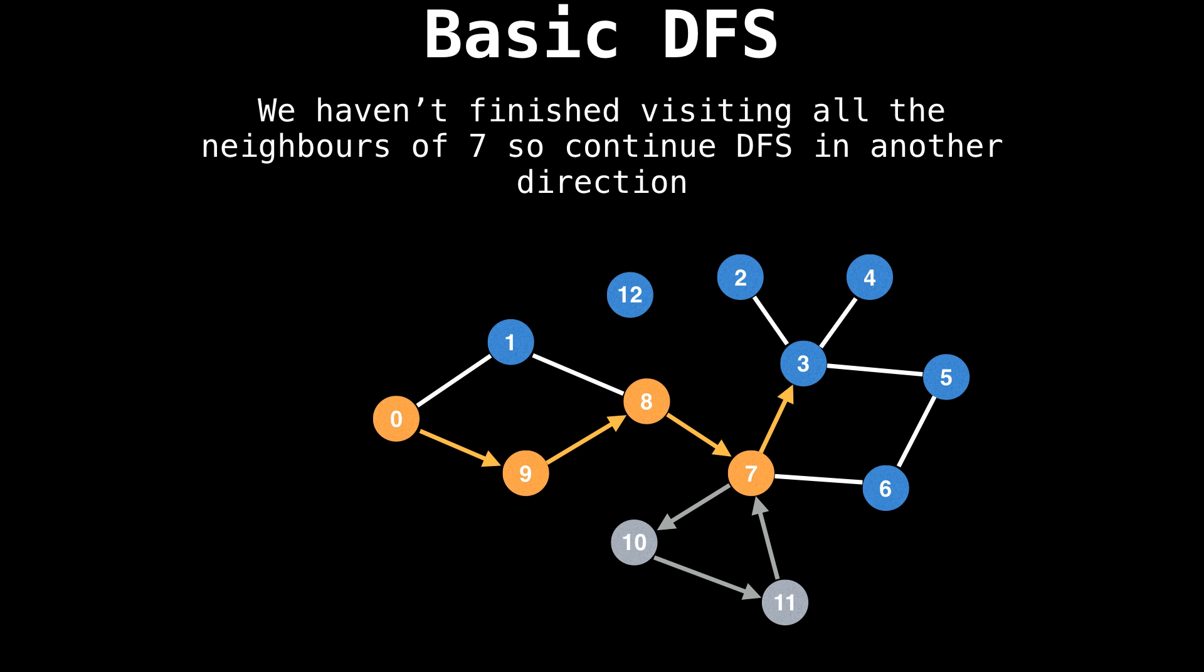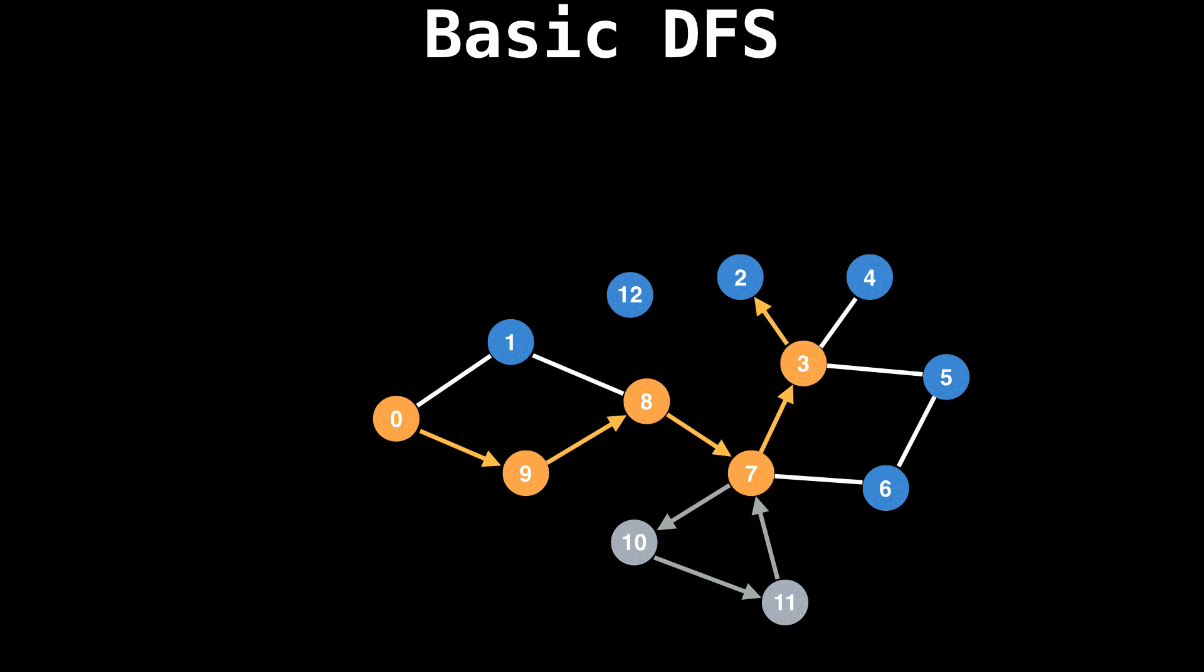I'm going to go to node three, and from node three to node two. Node two is a dead end, so we backtrack, then go to node four. Node four is also a dead end, so backtrack from node four back to node three, then pick node three's last edge to go to node five, five to six and six to seven. Can't go to seven because we're visiting seven currently, so backtrack all the way back to node eight.